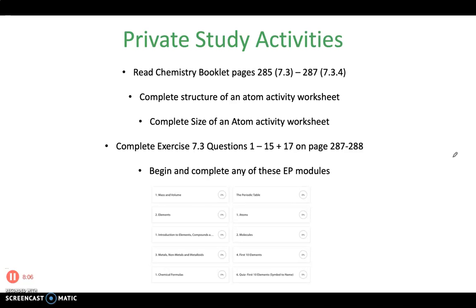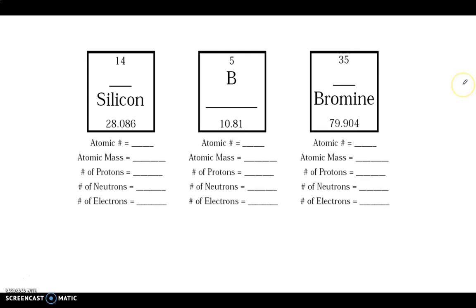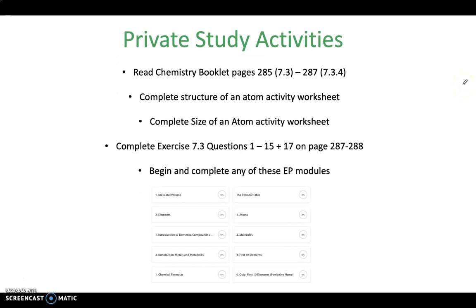After you've practiced filling in these periodic table elements, it's time to move on to some private study. Take some notes from this PowerPoint, constructing your study notes. Read your chemistry booklet, pages 285 to 287. There's a complete structure of an atom activity worksheet on Teams, which I'd like you to do, and also complete size of an atom activity worksheet. Once you've done that, complete exercise 7.3 questions 1 to 15 plus 17 on page 287 to 288 of your chemistry booklet. And you can begin and complete any of these education perfect modules which are relevant to you.